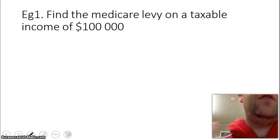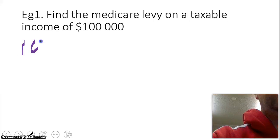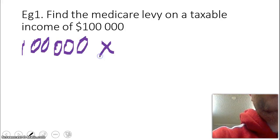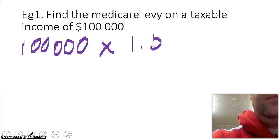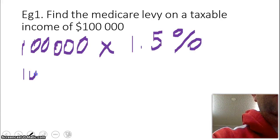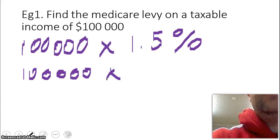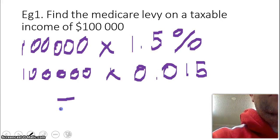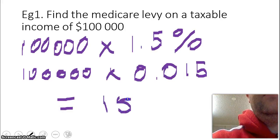Find the Medicare levy on an income of $100,000. So we take our $100,000 and all we need to do is find 1.5%. To do 1.5% what do we multiply by? We change it to a decimal times 0.015 and we get our answer $1,500.